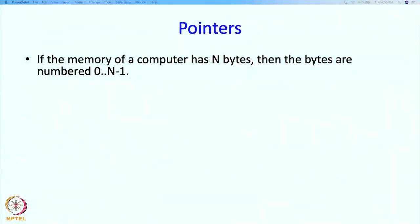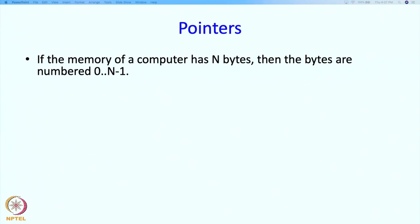If the memory of a computer has n bytes, then the bytes are numbered 0 through n-1. The number of a byte is different from what is stored in the byte. The number of the byte is said to be its address. Think of the bytes as sitting on a long street, numbered left to right along the street.